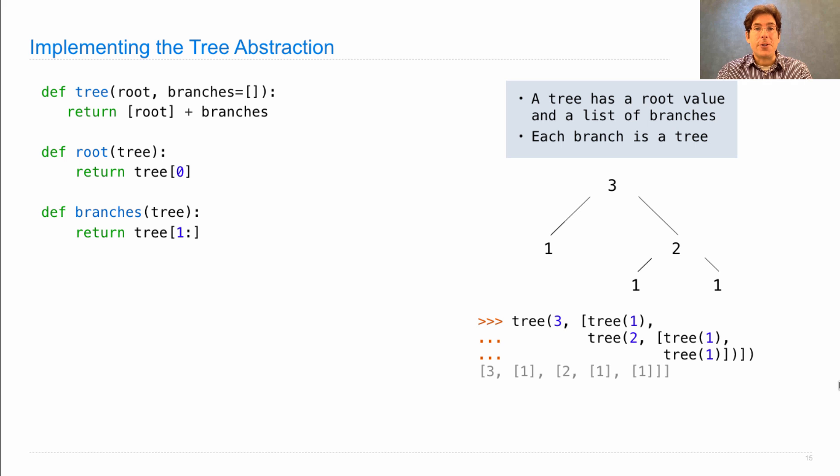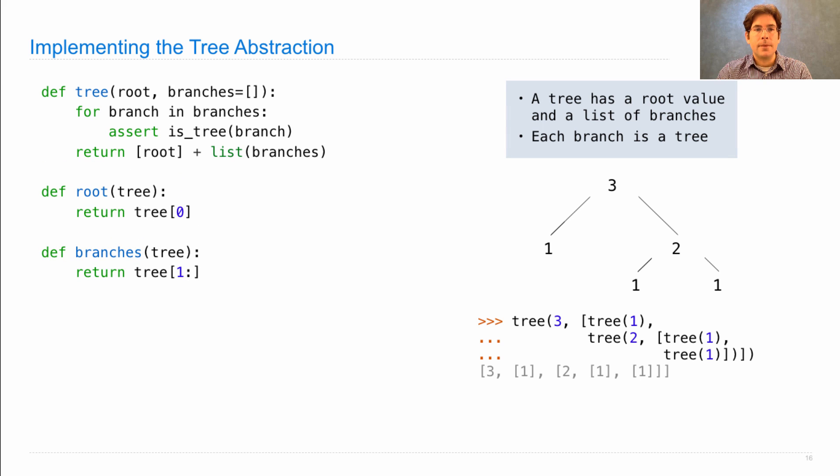And that's all we really need in order to make progress in implementing trees. But we're going to add a little bit more to our data abstraction in order to catch errors as we write code using the abstraction. So before I create the structure that I described, I'm going to go through every branch that was passed into the tree constructor and assert that it is in fact a tree. Each branch should be a tree. I'm also going to change this expression slightly by calling list on branches. So that if branches is some other kind of sequence, it gets converted into a list, and therefore we have a uniform representation of all trees, regardless of how the constructor is called.